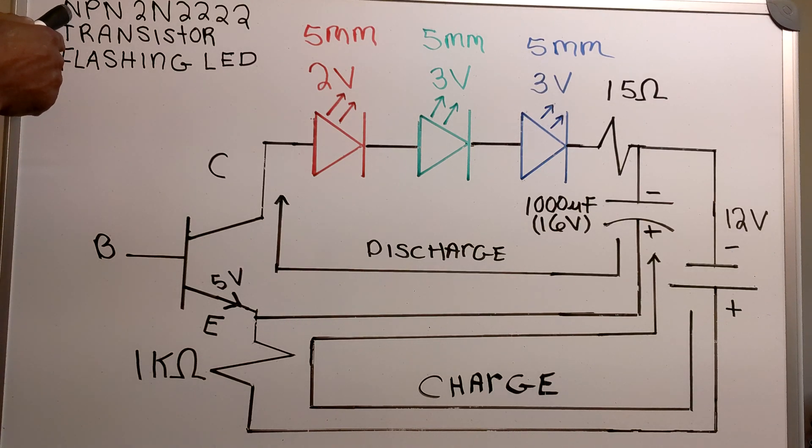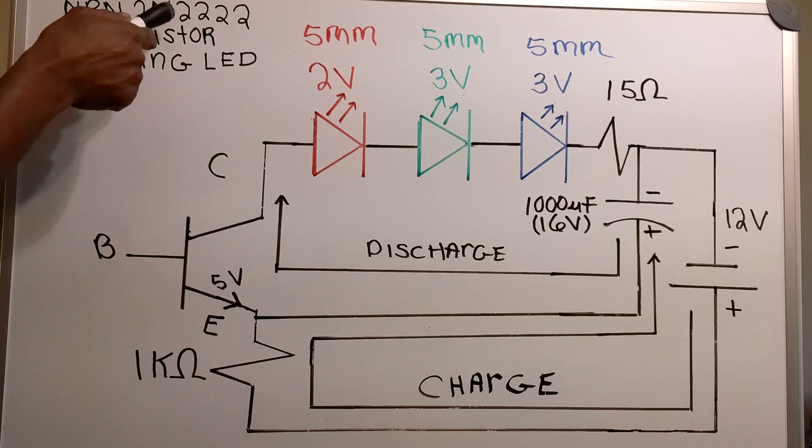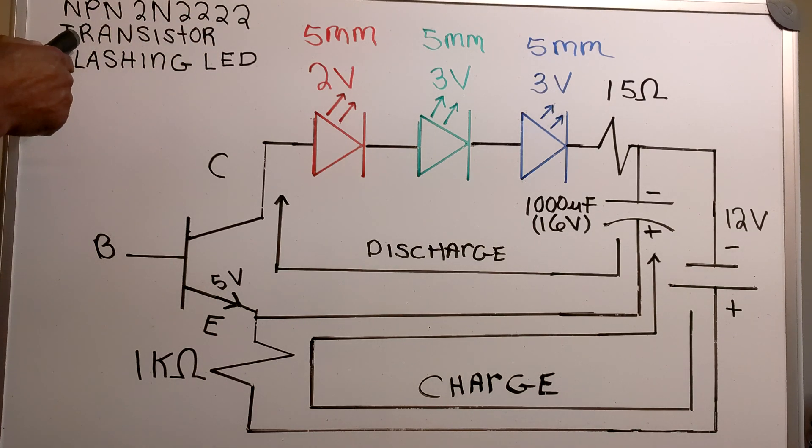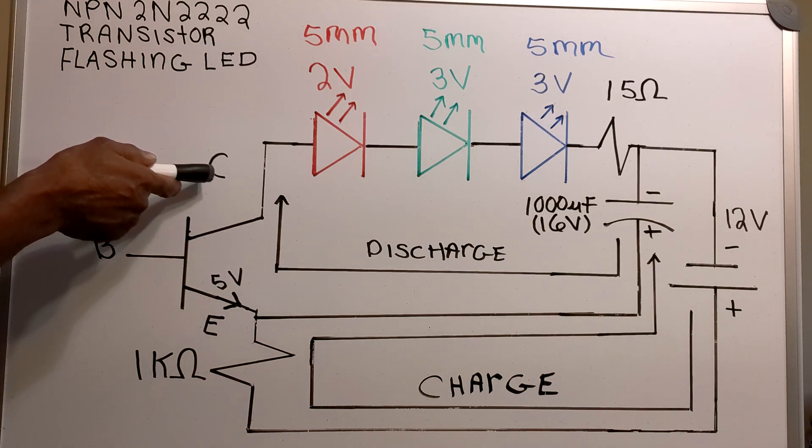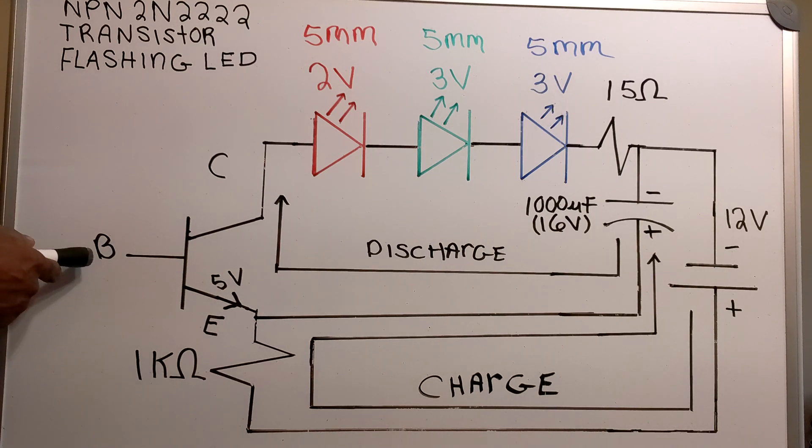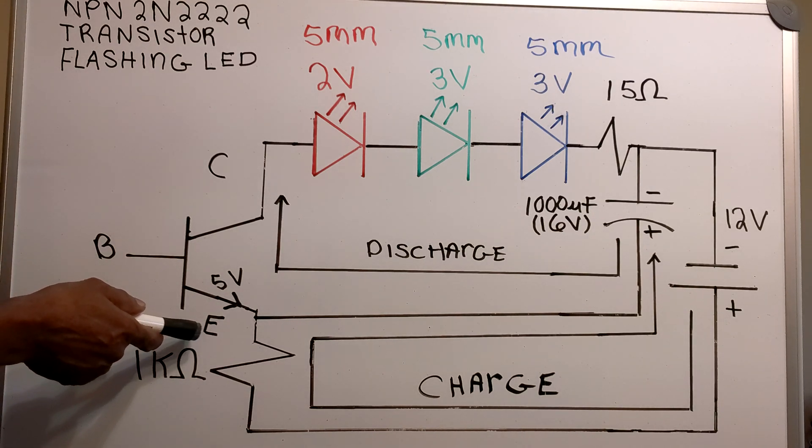In this video, I have the NPN 2N222 transistor flashing LED circuit. This is the collector side, this is the base, and this is the emitter.